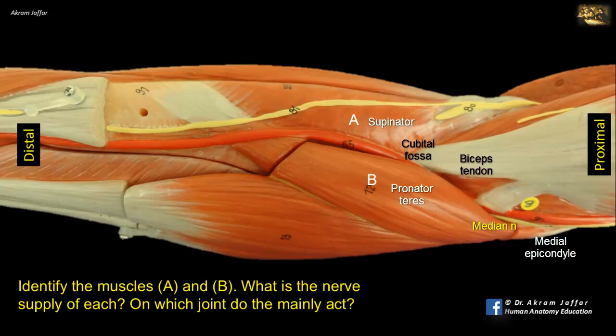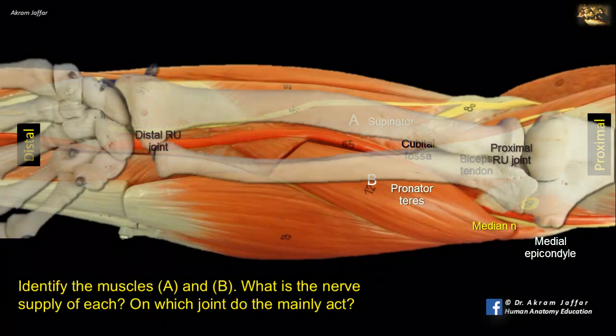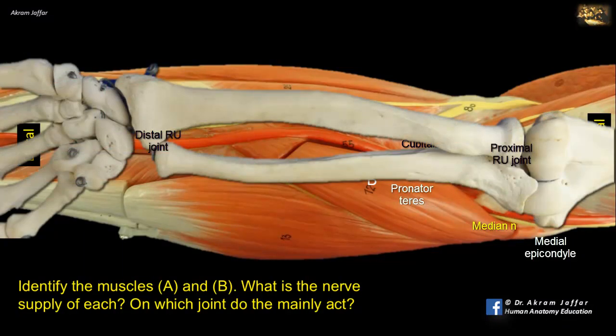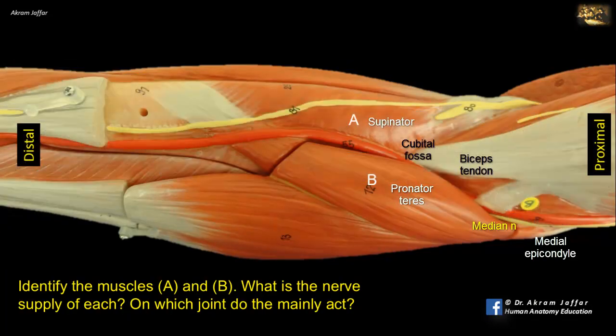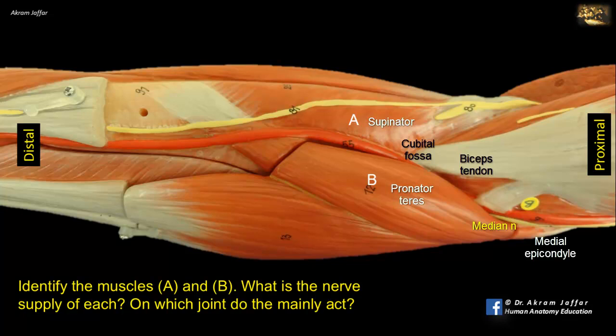Pronation and supination takes place at the proximal and distal radioulnar joint. It should be remembered that these are not the sole pronators or supinators of the forearm. In fact, biceps brachii is a more powerful supinator than the supinator muscle itself. And there is another pronator muscle, the pronator quadratus muscle, located in the deep group of the flexor compartment of the forearm.